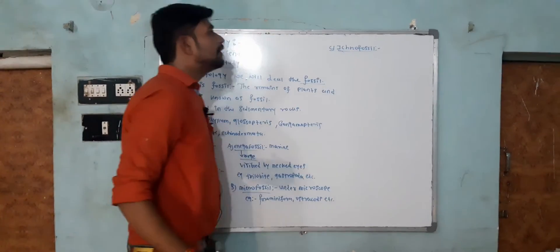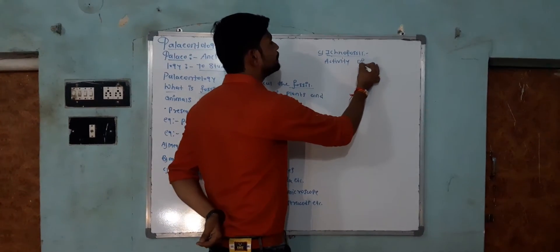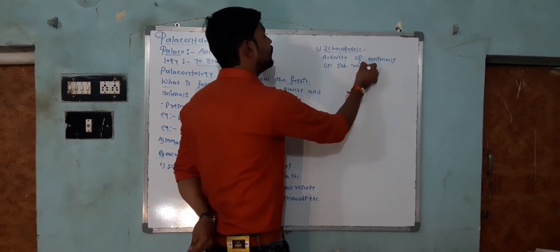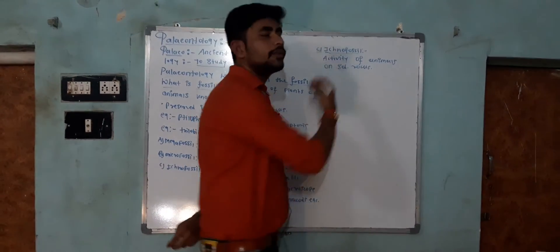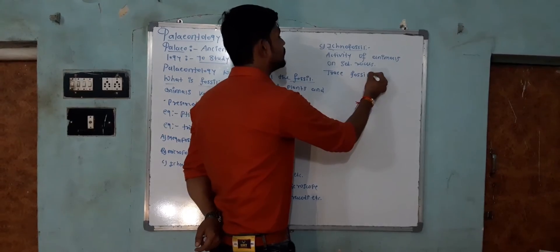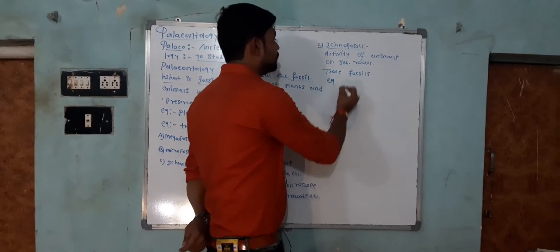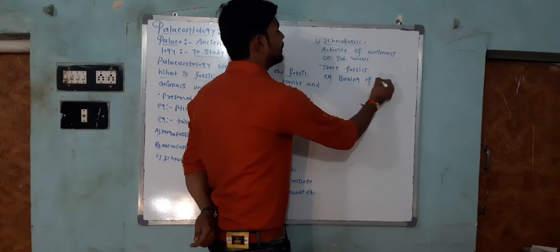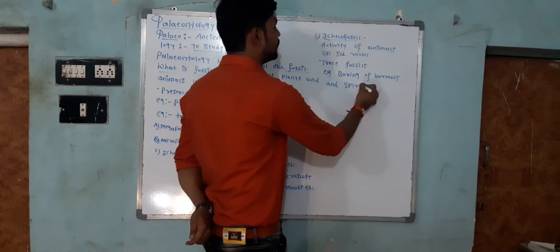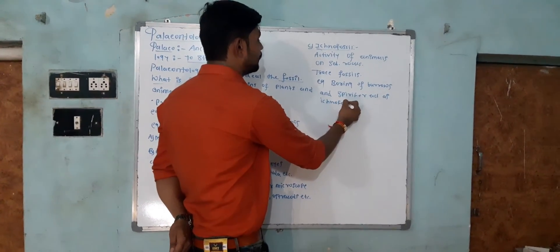Ichno fossils are formed due to the activity of animals on sedimentary rocks. Ichno fossils are also known as trace fossils, meaning there is a tracing of animal activity on sedimentary rock. Examples include the borings of burrows and Spirifer, which act as ichno fossils.